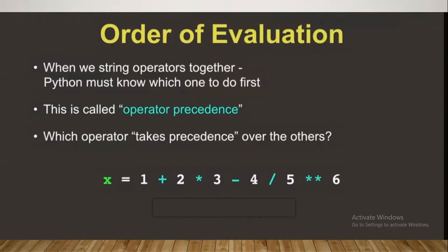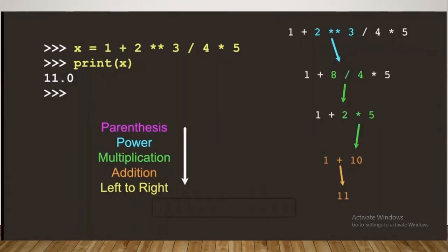We discussed this example and the rules to be followed. The order is: parenthesis, power, multiplication, addition, left to right. These give the highest to lowest precedence value or sequence.